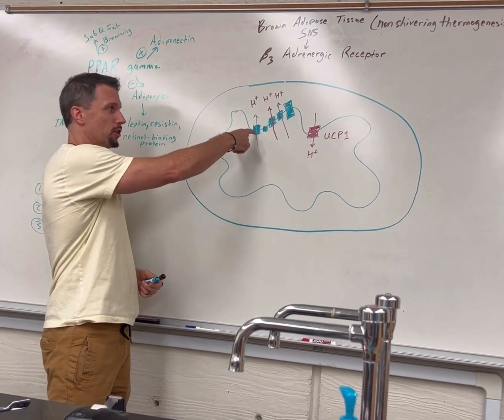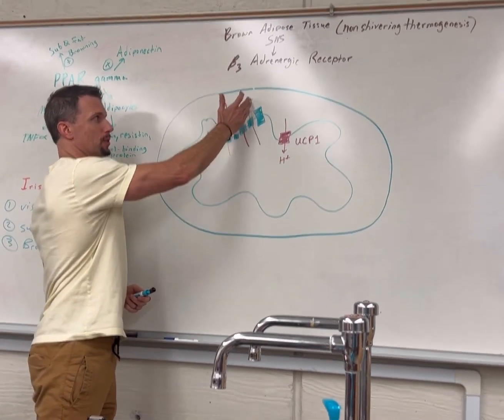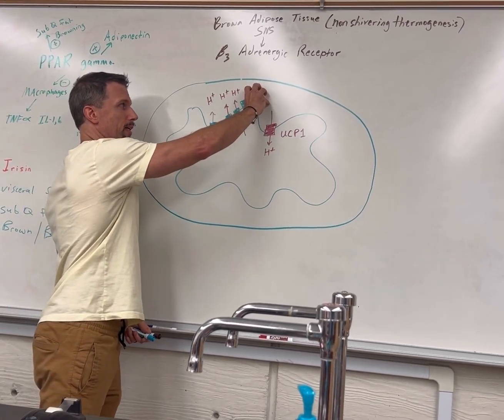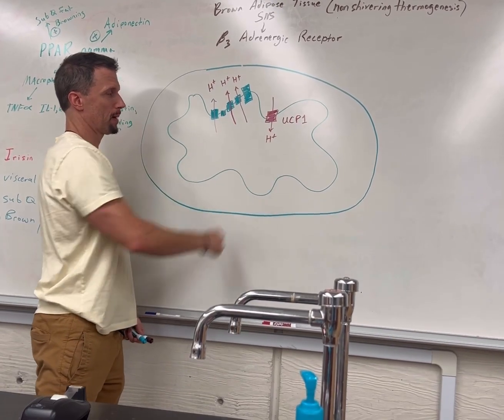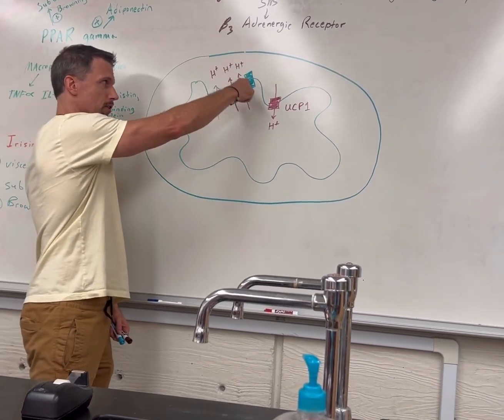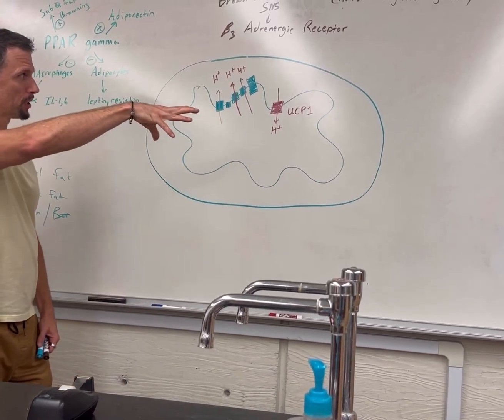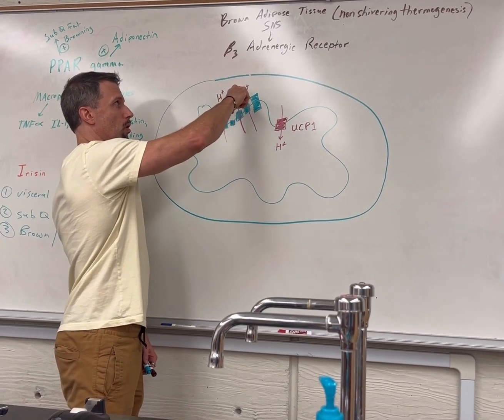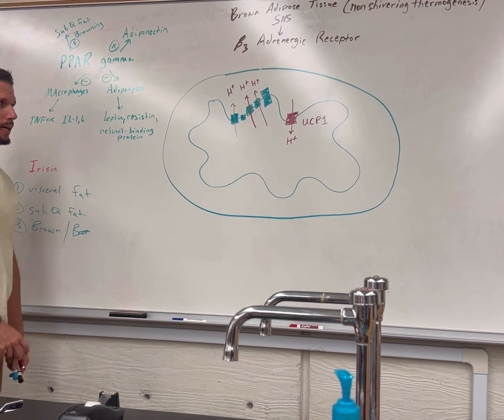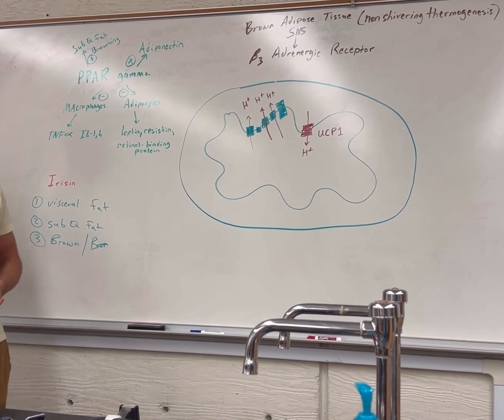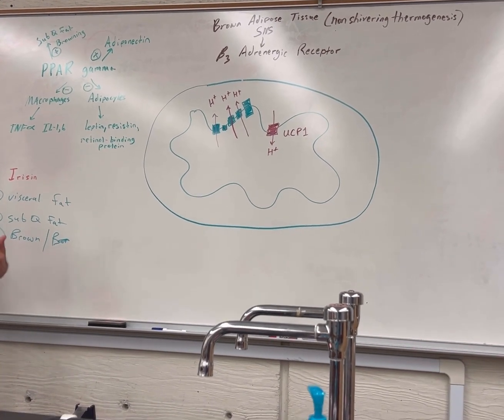They came in as NADHs and FADH2s and pumped hydrogen ions into the inner membrane space. We had this electrochemical gradient going from the intermembrane space back to the matrix. Typically it goes through this process and makes ATP, but in brown adipose tissue we have these channels that allow these to leap back into the matrix and dissipate as heat.